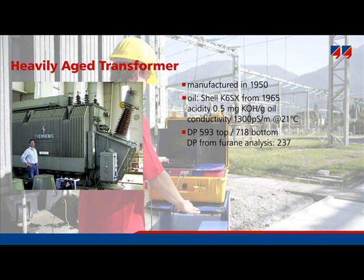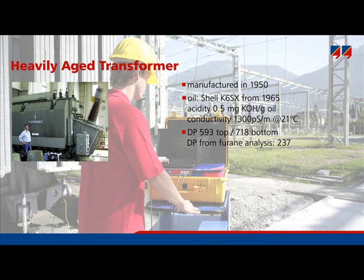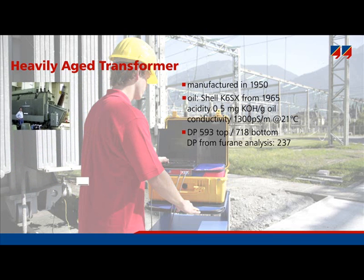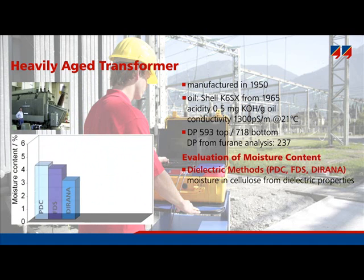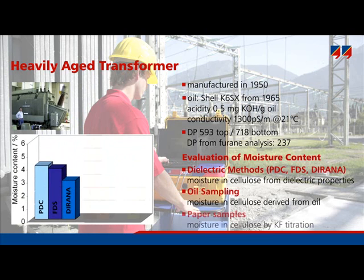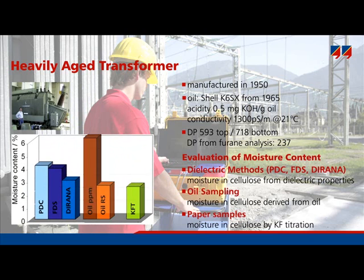It appears that the transformer's problem was with the oil rather than with the solid insulation. Various techniques were applied to evaluate the moisture content: dielectric response methods such as PDC, FDS, and Durana; oil sampling methods using the Oomen equilibrium chart based on relative saturation; and finally the analysis of paper samples taken from the transformer. The moisture content values obtained using these methods range from 2.5 to 6%.